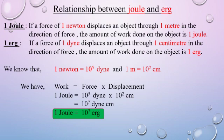Let us define 1 Joule and 1 Erg. If a force of 1 Newton displaces an object through 1 meter in the direction of force, the amount of work done on the object is 1 Joule. We will see the relationship between Joule and Erg. We know that 1 Newton equals 10 raised to 5 dynes and 1 meter equals 10 raised to 2 centimeters. After putting these values in the formula, we get 1 Joule equals 10 raised to 7 Erg.